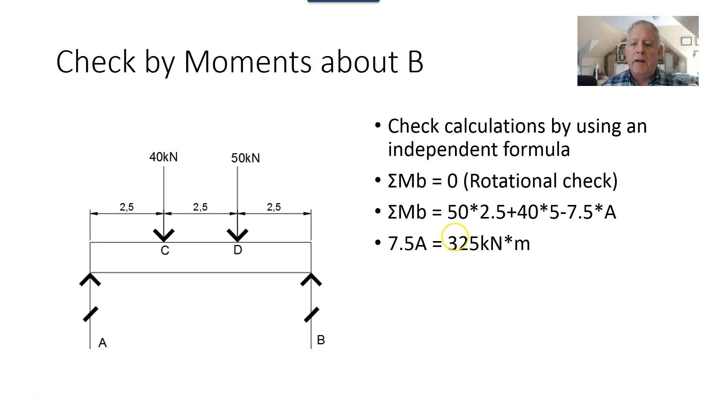Reorganizing, 7.5 A equals 325 kilonewton meters, dividing by 7.5 meters gives us the same answer as on the previous page. So whenever you do statics problems, always do a check. Thanks for watching.